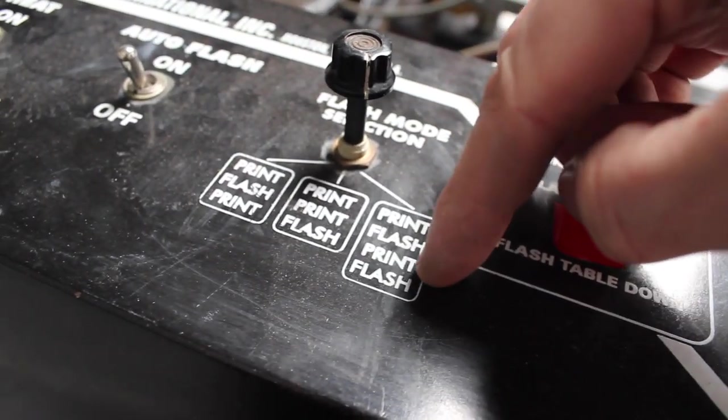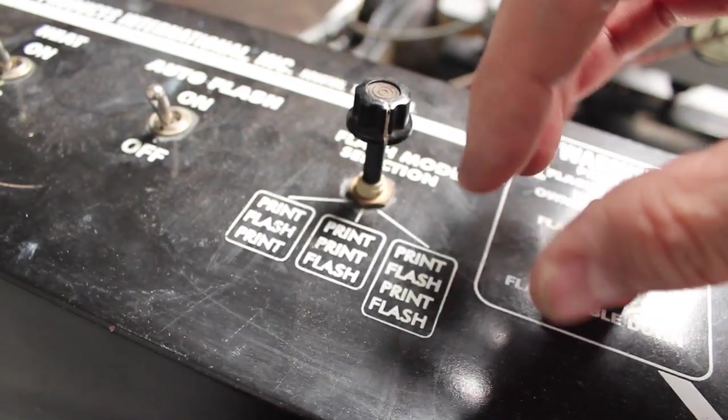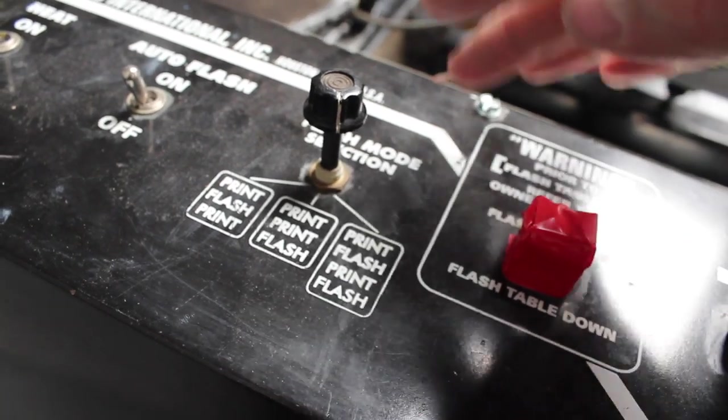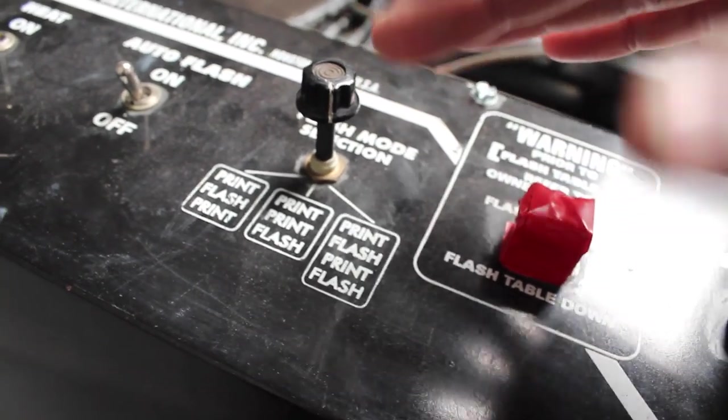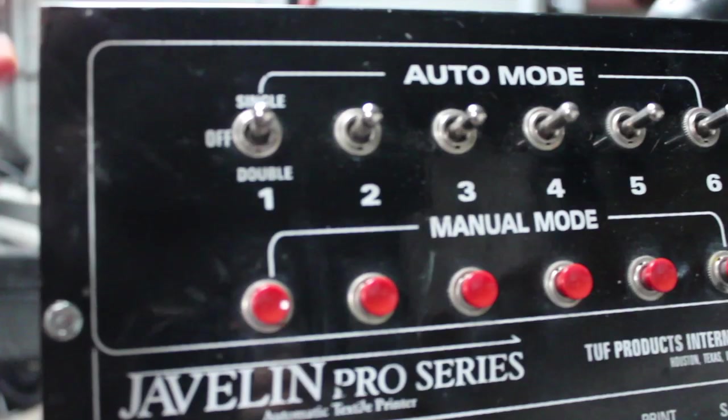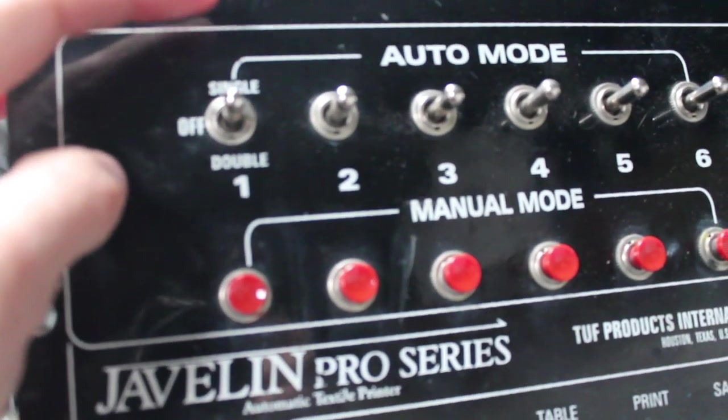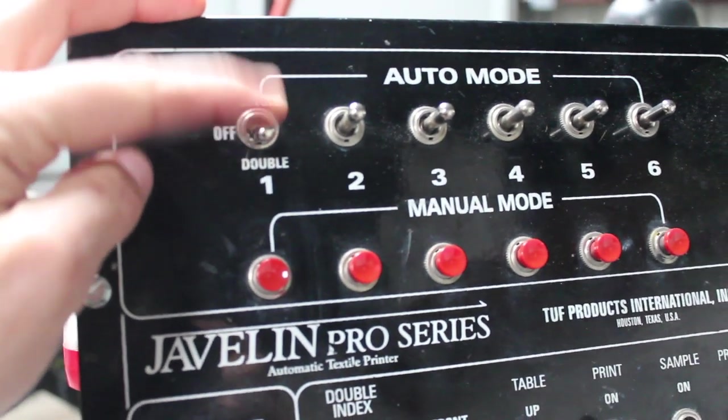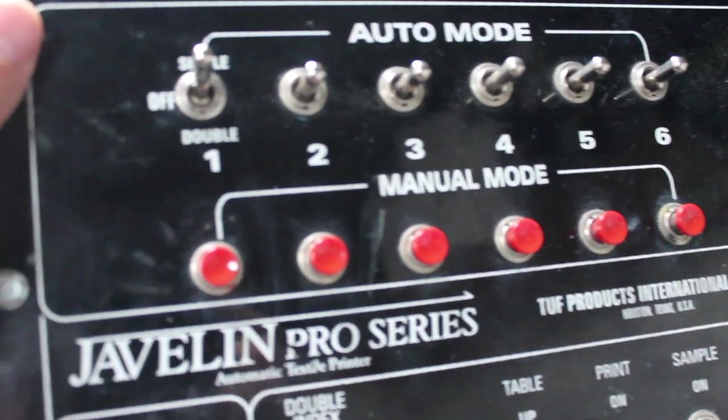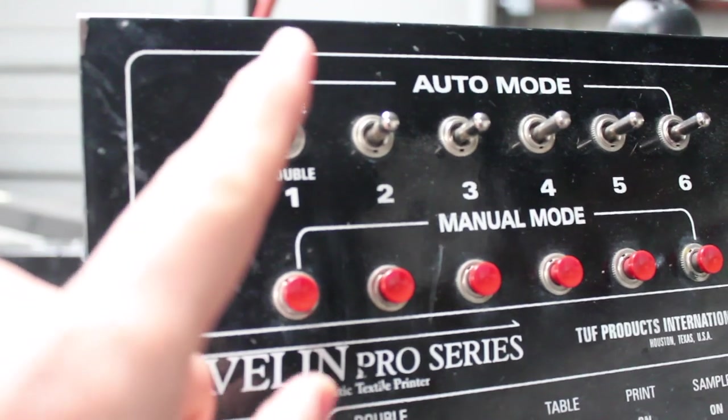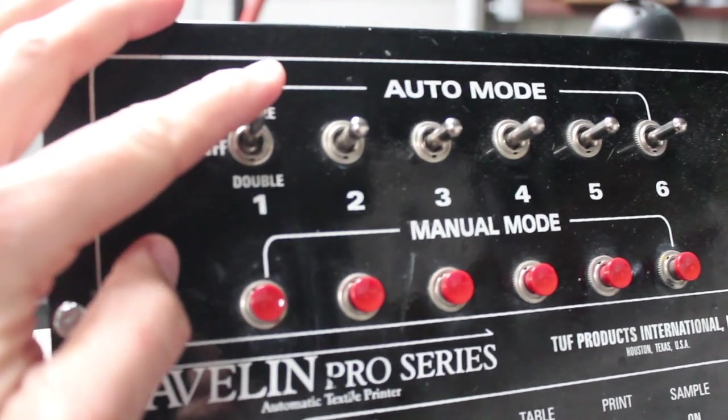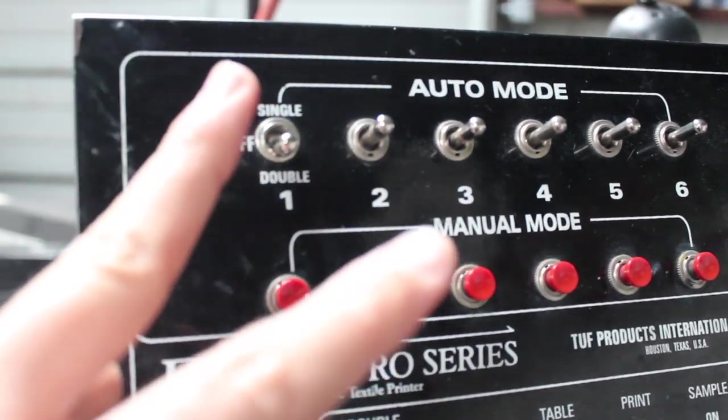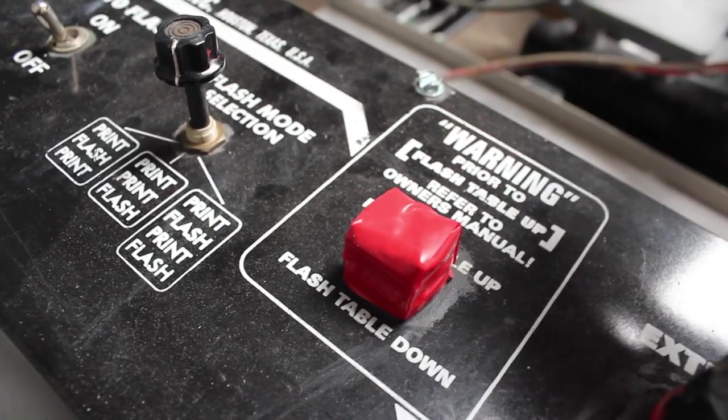Print flash print flash - let's say you have a situation where you're doing six colors but you need a bright white base. You can use this feature and it will print, flash it, print it again, it'll flash it, so that way you can do your overprint colors on top of it. With your print flash print setting or your print print flash, your print flash print flash, you have to have it in double mode. If you just have it in single mode, it's just going to print once and then flash it. Keep in mind you have to have it in the double setting for the squeegee to actually print twice.